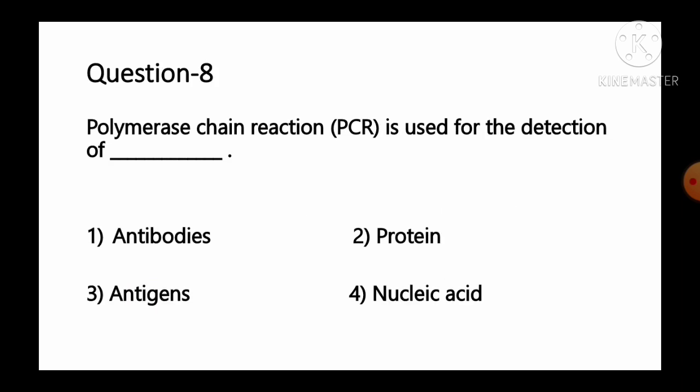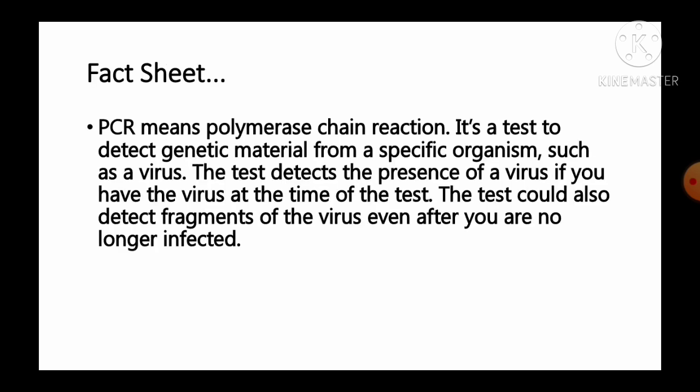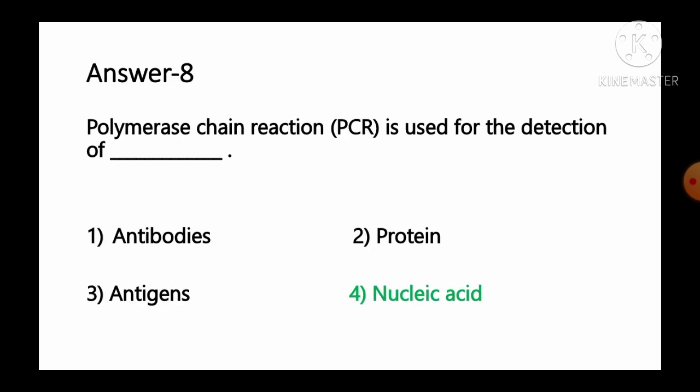Question number 8: Polymerase chain reaction (PCR) is used for the detection of — option 1 antibodies, option 2 proteins, option 3 antigens, option 4 nucleic acid. PCR is a test to detect genetic material from a specific organism such as a virus. The test detects the presence of a virus if you have the virus at the time of testing and could also detect fragments of the virus or its genetic material after infection. So option number 4, nucleic acid, is the correct answer.